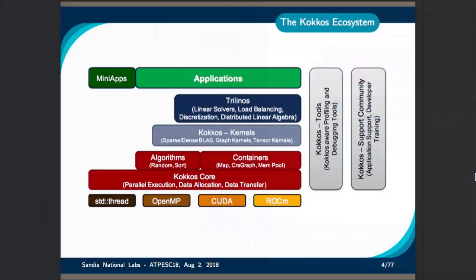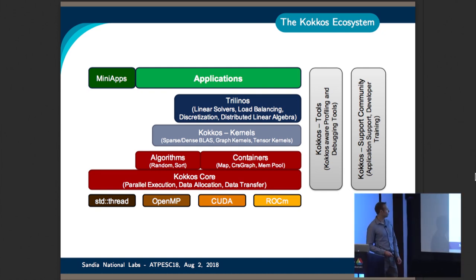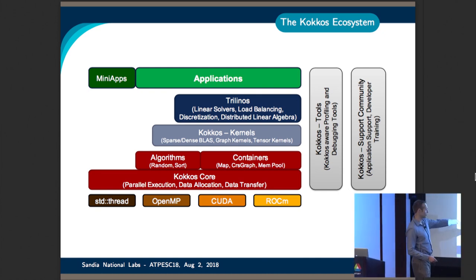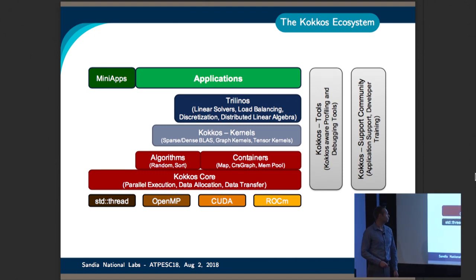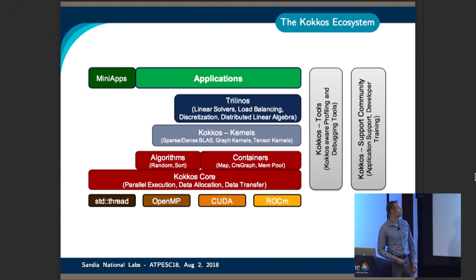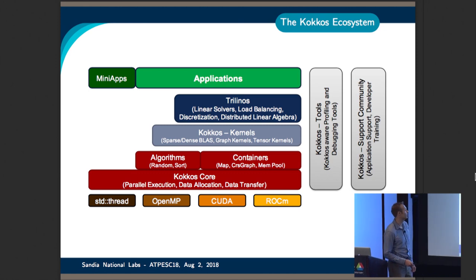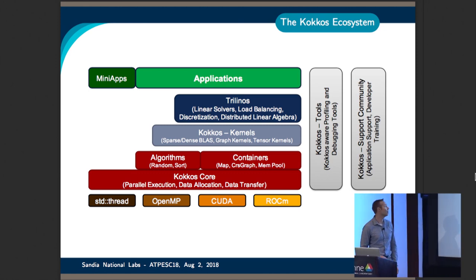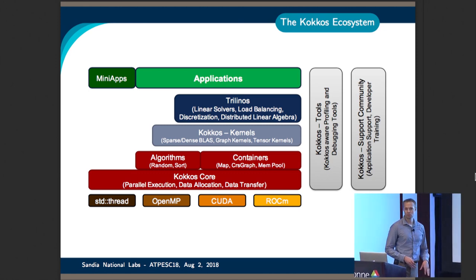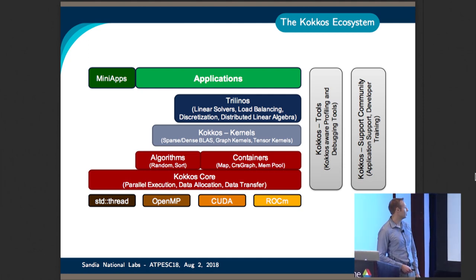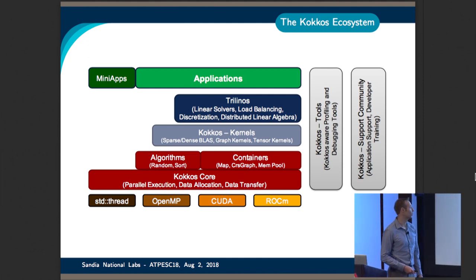Kokkos is part of what we're calling the Kokkos ecosystem. Today we'll be talking about Kokkos Core, the core library, which sits on top of std threads, OpenMP, CUDA, and ROCm backends. The Kokkos Core library contains useful algorithms and containers that are Kokkos-aware, built on top of Kokkos. There's a separate codebase called Kokkos Kernels, which contains a growing number of sparse and dense linear algebra, graph, and tensor kernels. Kokkos and Kokkos Kernels are maintained independently on GitHub, but they're also packages within the Trilinos library.